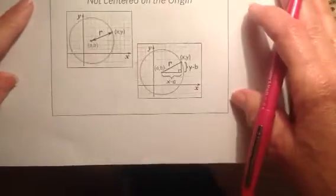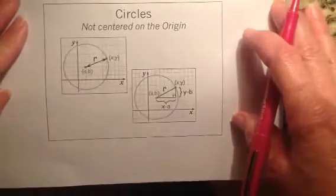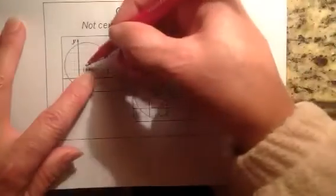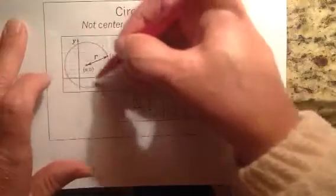But sometimes our circles are not centered on the origin. Sometimes they are centered somewhere else. So if we go away from the origin, that's okay, given any r, any radius, I can still go to the right, I can go up, down, I go to the left, and an infinite number of points around that center point.